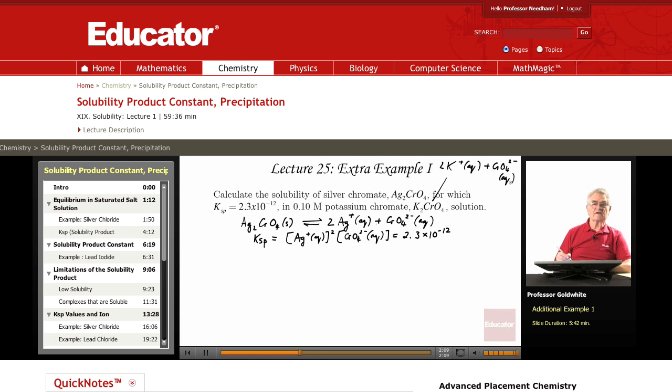Well, let's call the solubility that we are asked to calculate S, S moles of silver chromate per liter. Then the concentration of silver ion in our solution equals 2S.